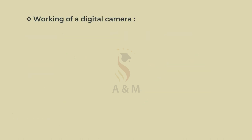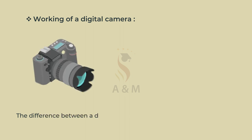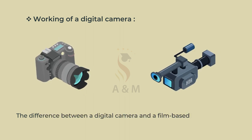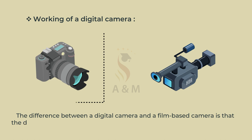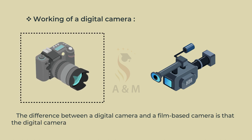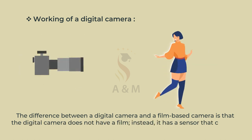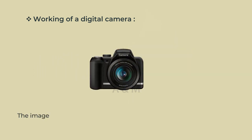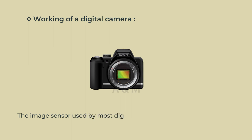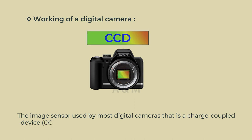Working of a Digital Camera: The difference between a digital camera and a film-based camera is that the digital camera does not have a film; instead it has a sensor that converts light into electrical charges. The image sensor used by most digital cameras is a charge-coupled device, i.e. CCD.